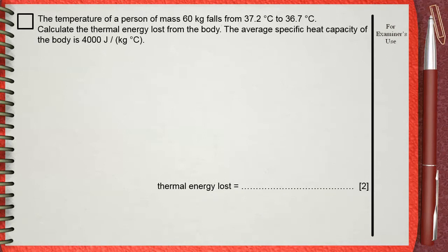The temperature of a person of mass 60 kilograms falls from 37.2 to 36.7 degrees Celsius. Calculate the thermal energy lost from the body. The average specific heat capacity of the body is 4000 joules per kilogram degrees Celsius.